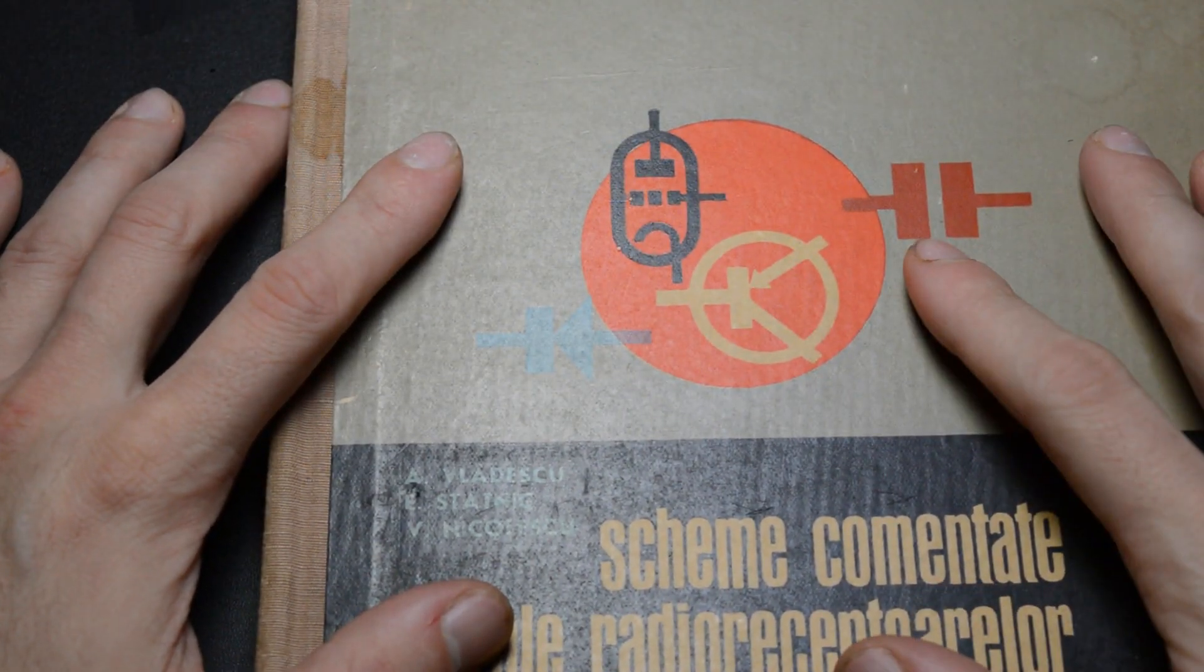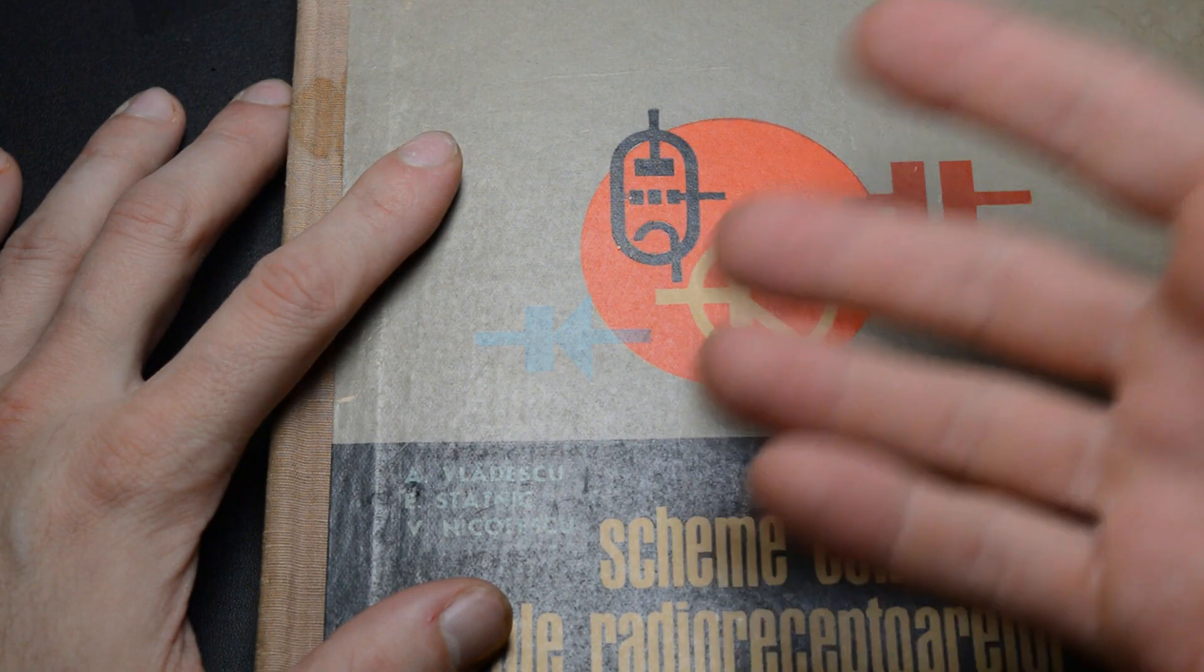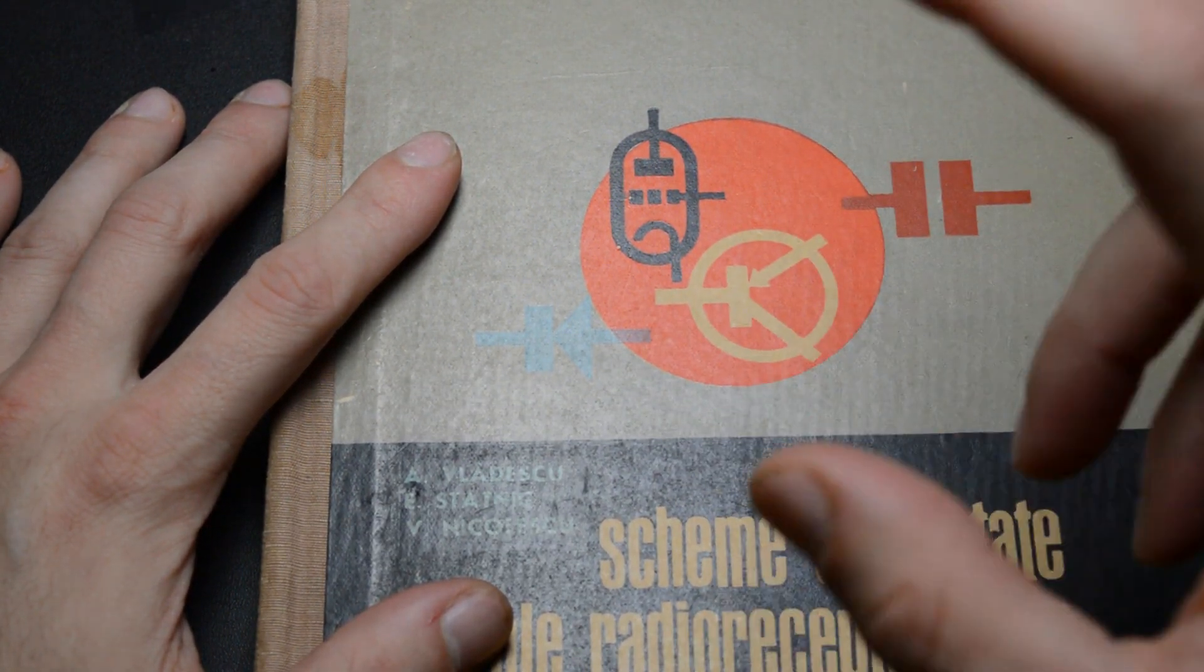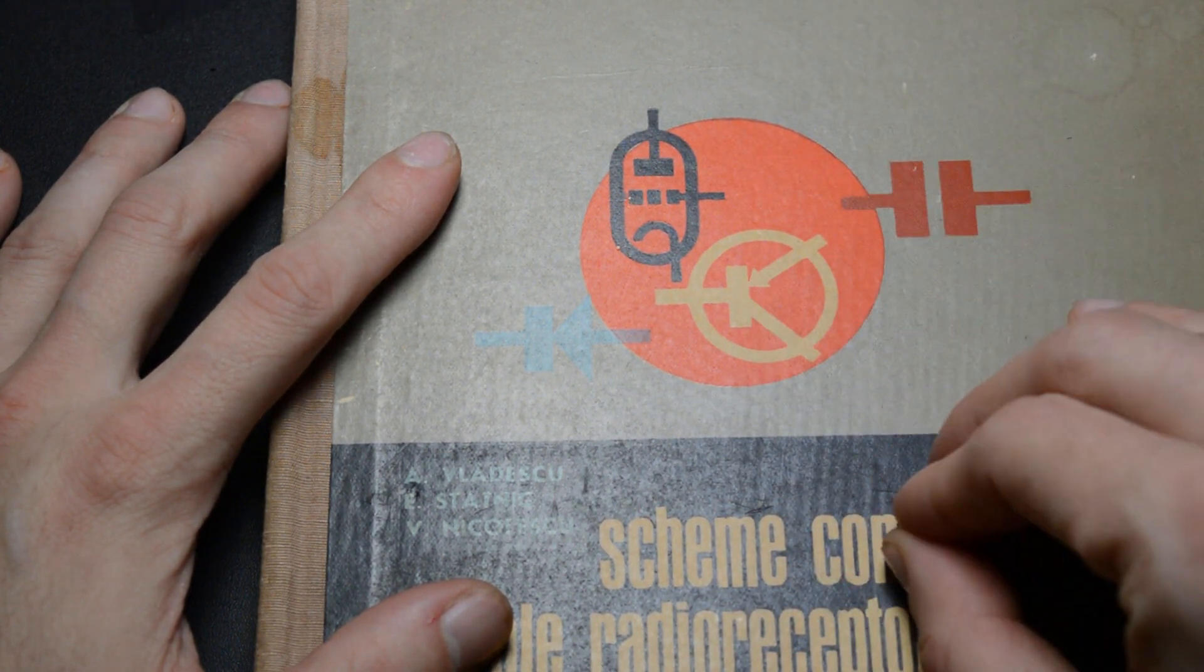Since my previous video in which I took a tube apart had mild success, I decided to do more. And what better way of continuing this series than by looking at the tubes that make up a vacuum tube radio.